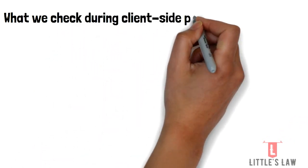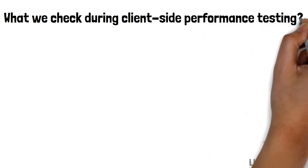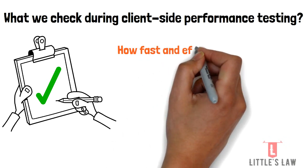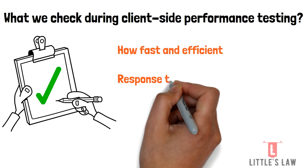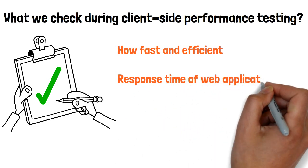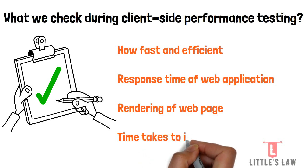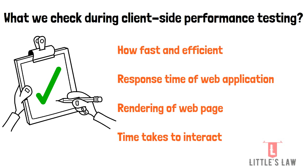In client-side performance testing, we observe how fast and efficient the application is. We observe the response time of the web application for first-time users and when they revisit — because cache plays an important role. We also observe the time the web page takes to render elements to users, the time for the user to interact with the first web element, and the average time to display web content.